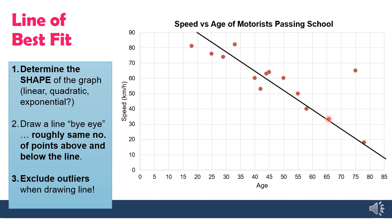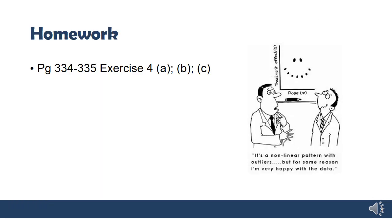The value of this line is that you can now interpolate — you can look at the line and predict what someone else might do. For example, if somebody who's 70 is driving past, they might drive at a speed of around 27 kilometers per hour. You'll learn a lot more next year about lines of best fit and how to do it more accurately, but for now we're happy for you to do it by eye. For homework, you're going to do three problems: exercise four, A, B, and C, on page 334.